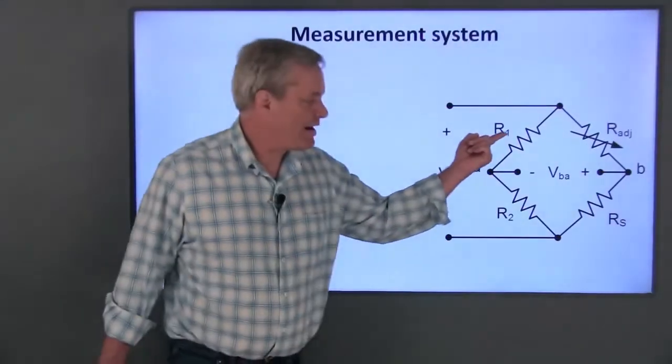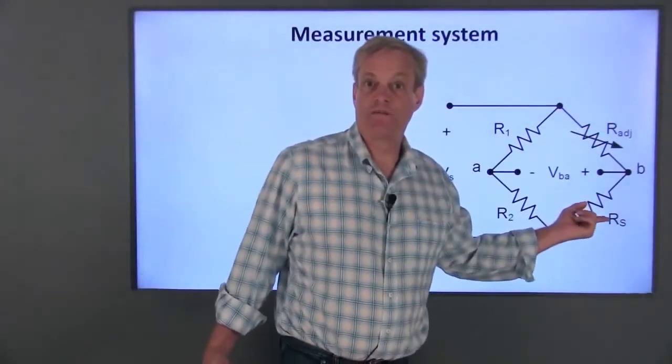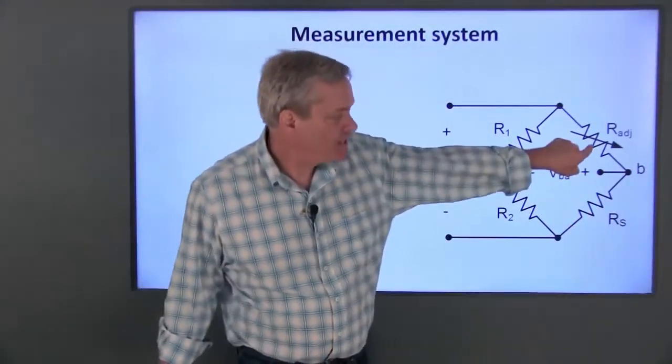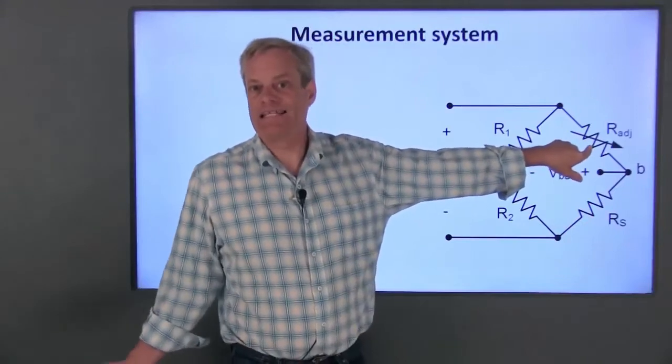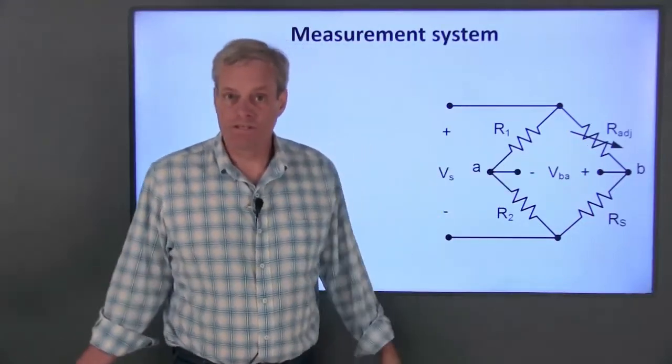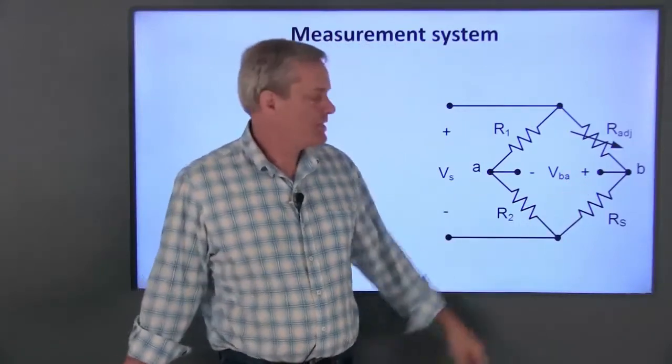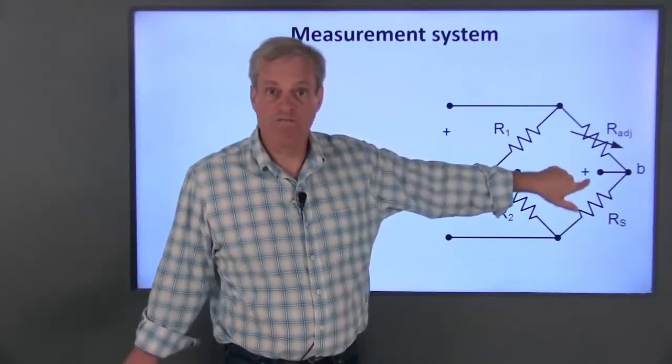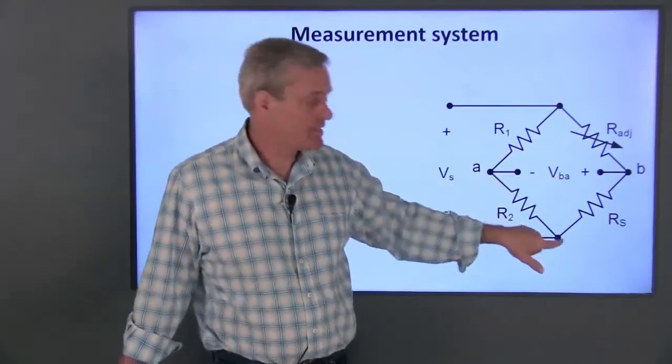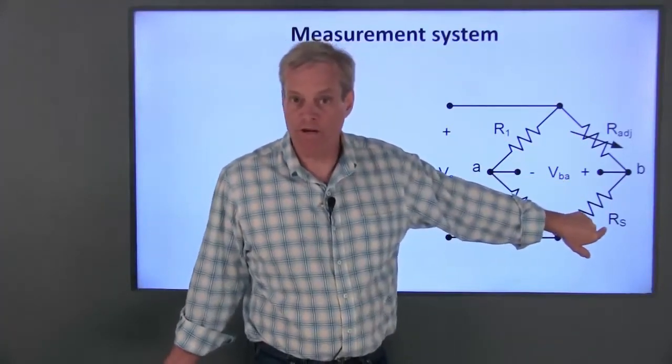This circuit doesn't require any of these four resistors to be identical, and it uses a potentiometer to do what's called balancing the bridge circuit. When the circuit's balanced, V sub Ba is equal to zero. What we'll do is change the resistance of this pot to force V sub Ba to be zero when the sensor is at its nominal operating point.